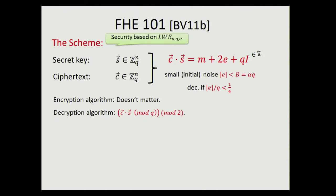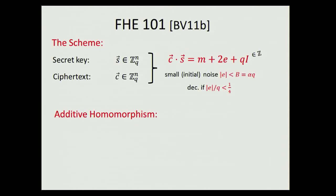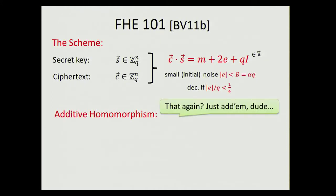The scheme is secure under the LWE assumption with dimension N, modulus Q, and noise rate α. The bigger α is, the more secure the scheme becomes. For additive homomorphism: given ciphertexts C₁ encrypting M₁ and C₂ encrypting M₂, just add them together. From the equation, you immediately get an encryption of M₁ + M₂. Addition is straightforward; the challenge is always multiplication.